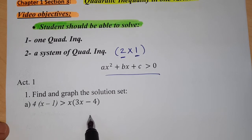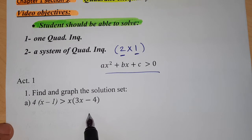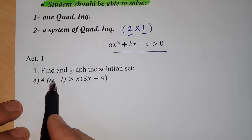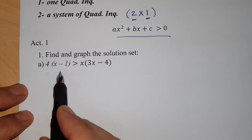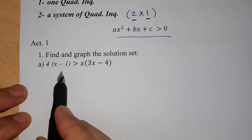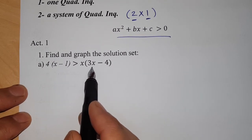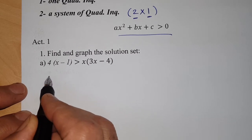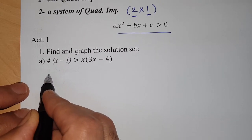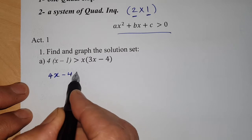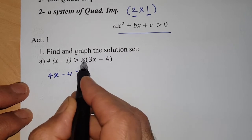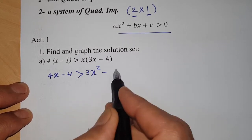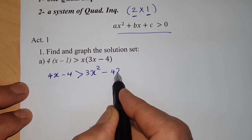Let me start with Activity Number 1: find and graph the solution set of this inequality — 4(x−1) > x(3x−4). We start by removing the brackets: 4x − 4 is bigger than 3x² − x + 4x.